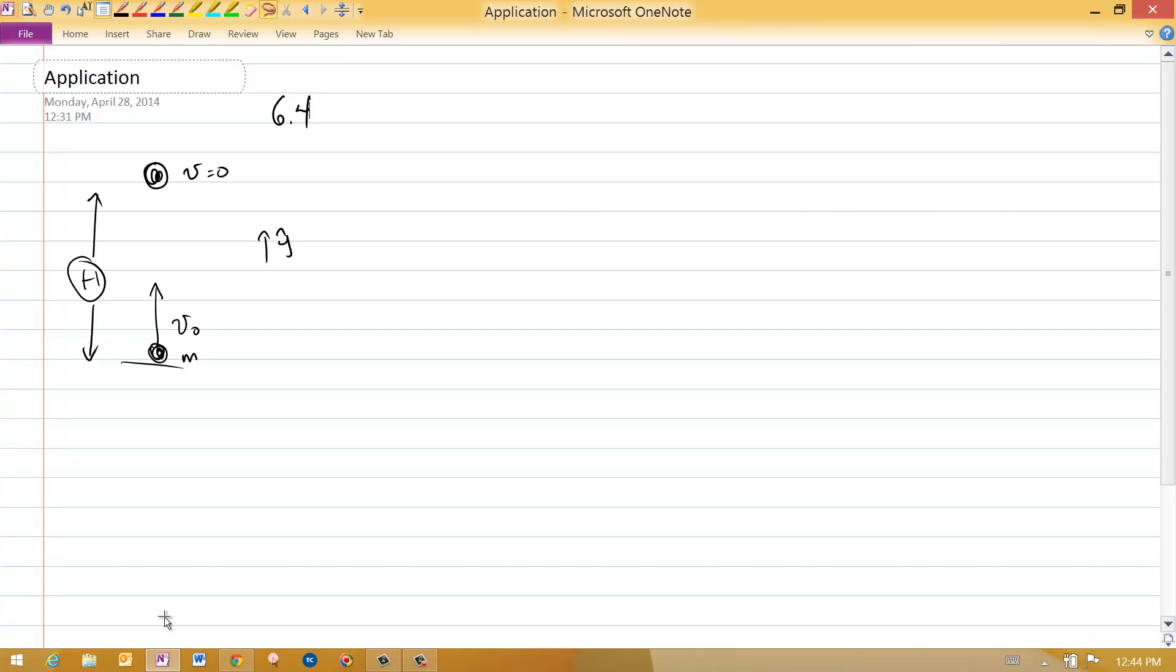So we're not going to have to do the Momentum Principle, Average Velocity, Position Update Chain of Reasoning to solve this problem. I've got an object that I'm throwing upwards. It has a mass m that starts with a speed v0 pointing upwards, and it is at rest. I want to know how high I throw it. That's this H thing.